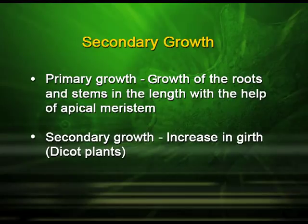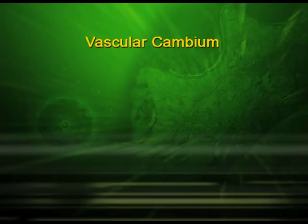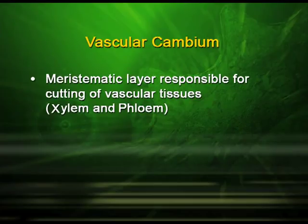Now, what is secondary growth? It is the increase in girth. The tissues involved in secondary growth are the lateral meristem, the vascular cambium, and the cork cambium. The vascular cambium is the meristematic layer responsible for cutting of vascular tissues, that is the xylem and phloem.